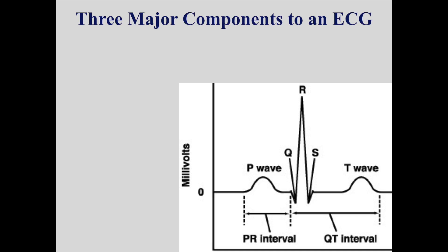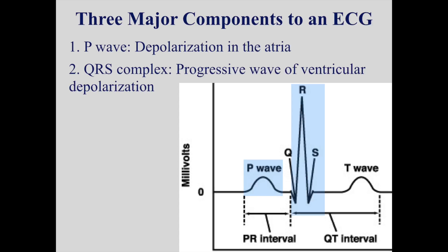There are three major components to an ECG. First, the P wave, which represents the depolarization of the atria. Then the QRS complex, which shows the wave of ventricle depolarization. And lastly, the T wave, which depicts the repolarization of the ventricles.